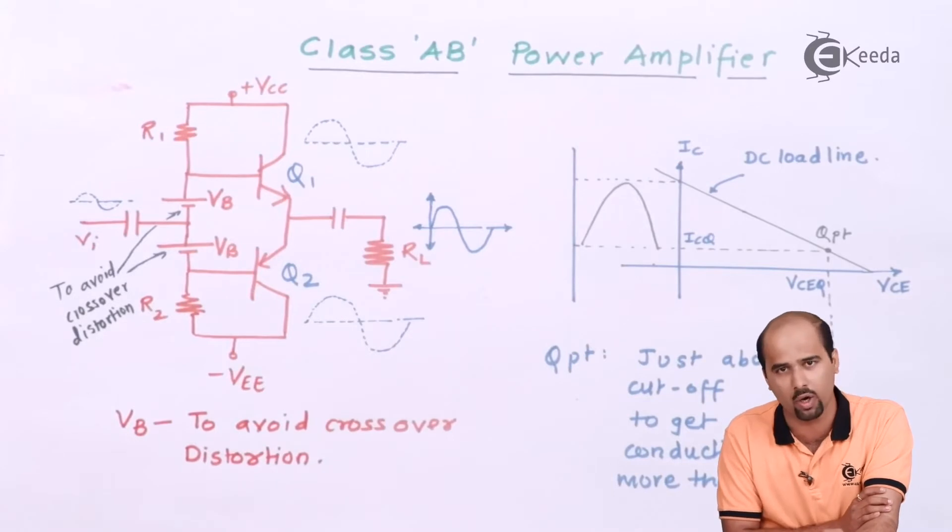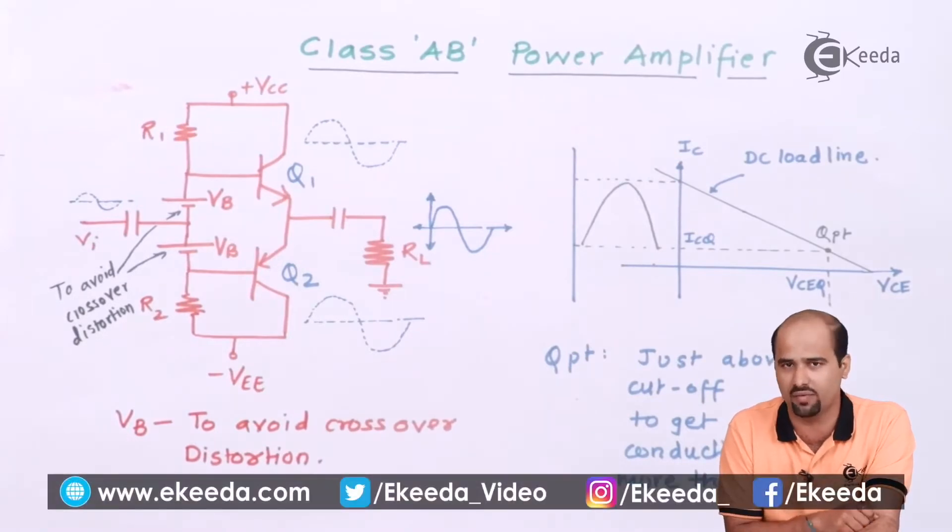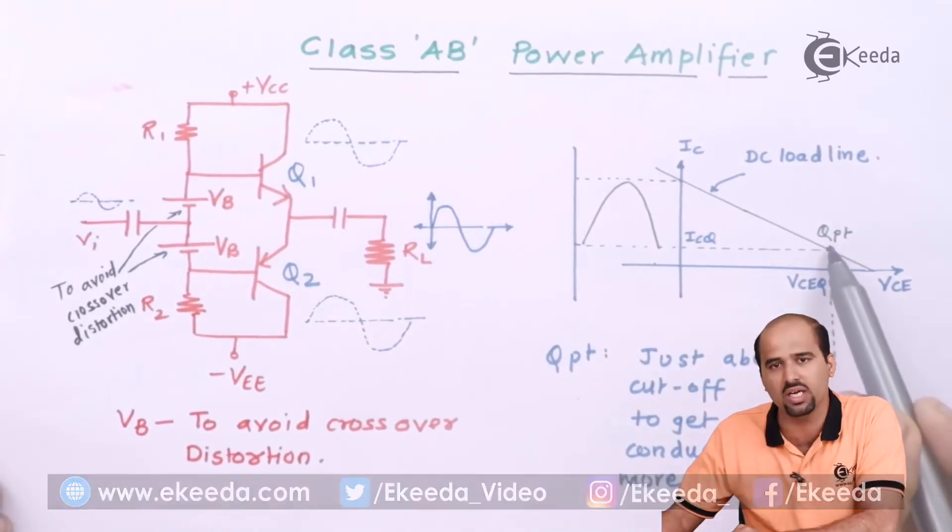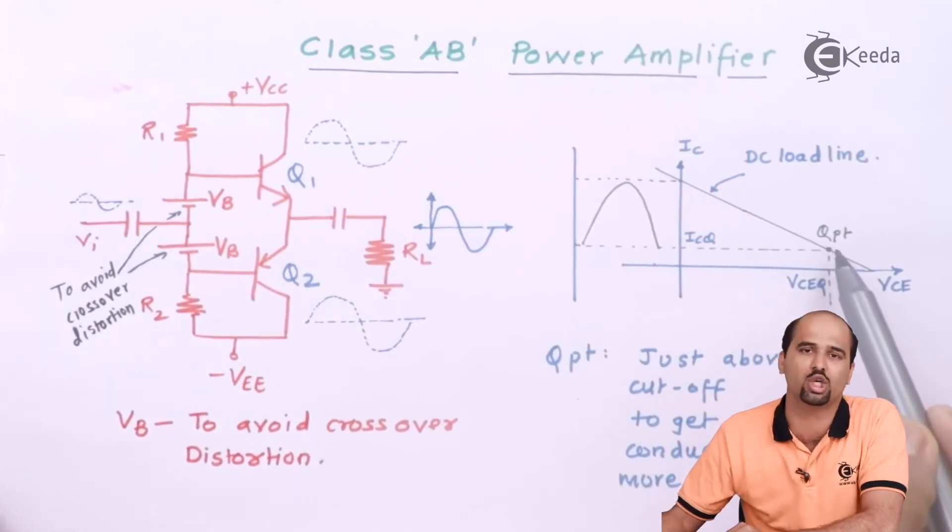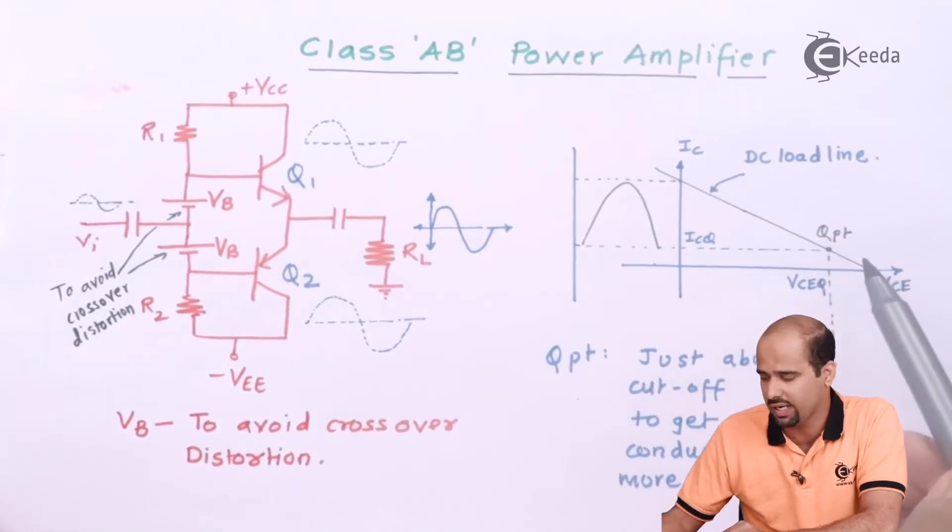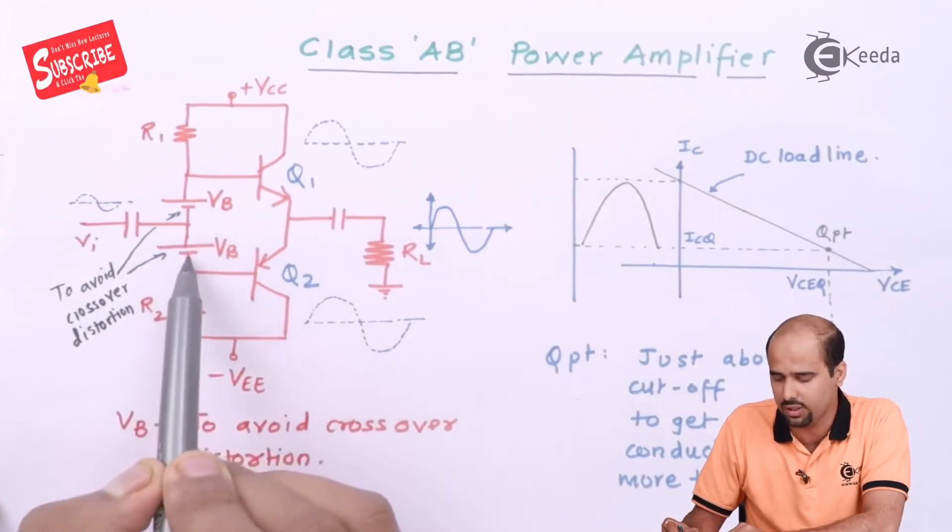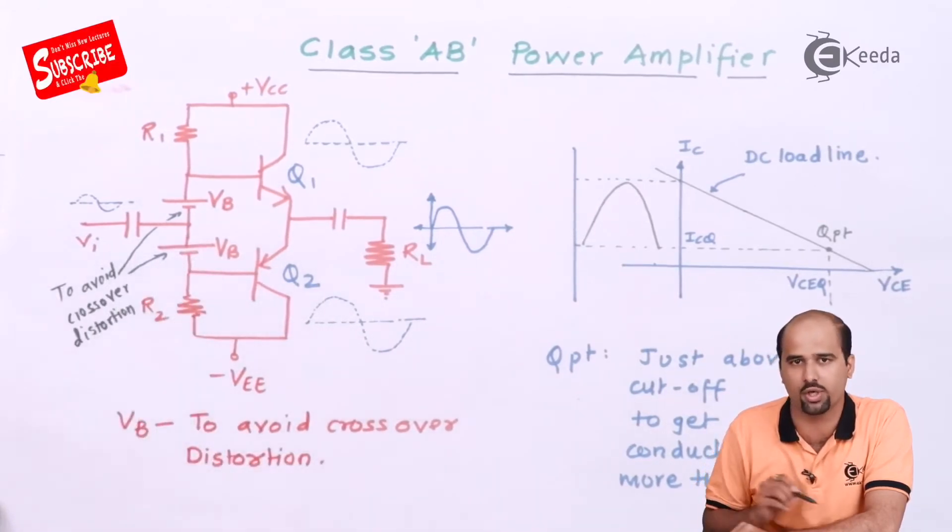In class AB power amplifier, we are adding the advantage of class A amplifier that is nothing but I'm just enhancing the Q point towards the active region. That means I'm taking the advantage of class A power amplifier and with that I am saying that I'm applying VB to avoid the crossover distortion.